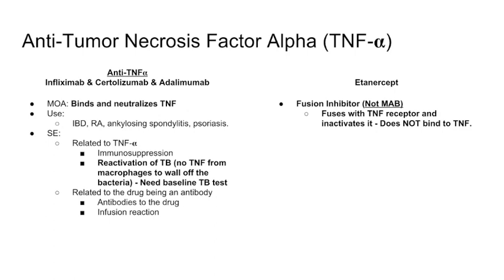Now moving on to monoclonal antibodies — first, the anti-TNF-alpha agents. The three we'll discuss are infliximab, certolizumab, and adalimumab. These bind and neutralize TNF-alpha. They're used for irritable bowel disease, rheumatoid arthritis, ankylosing spondylitis, and psoriasis — not really used much in transplant.